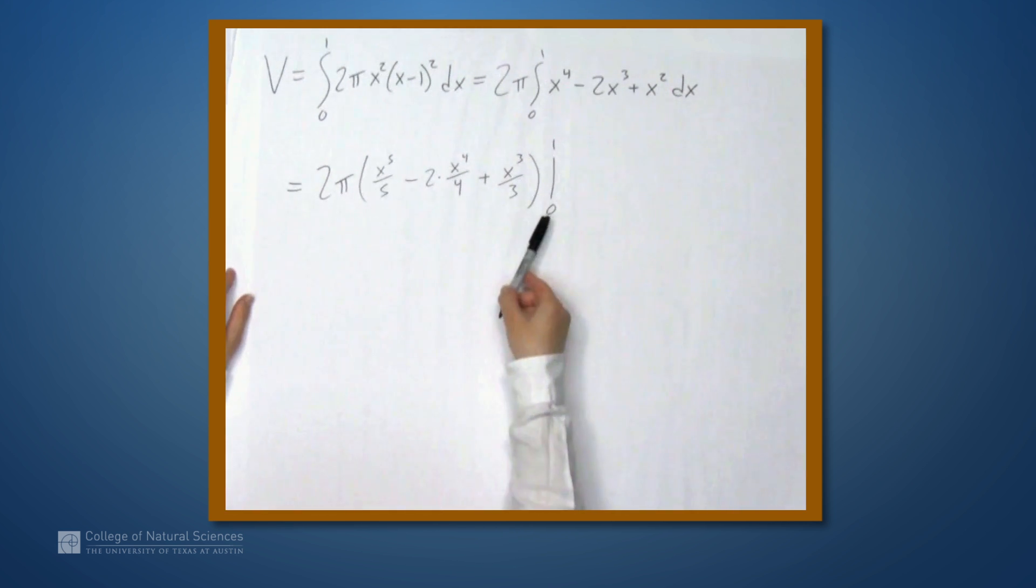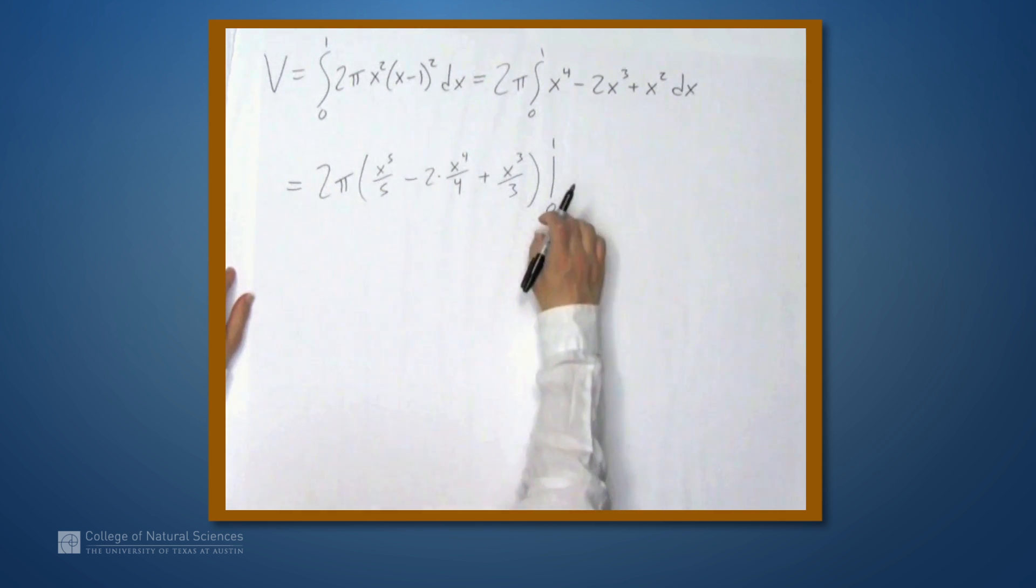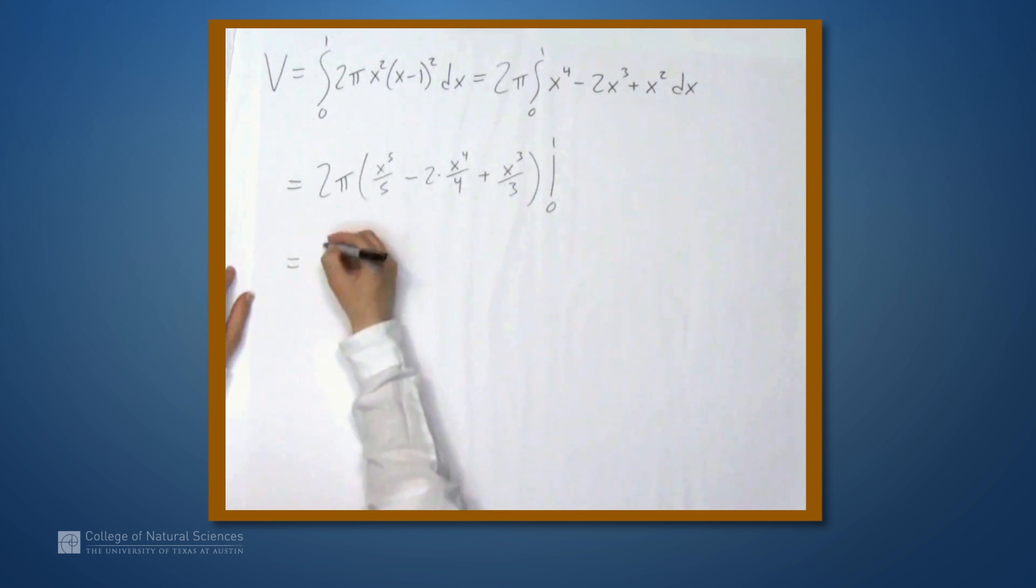Well, we know that when we plug in 0, each of these terms is going to become 0, so we can ignore that part. Let's just plug in 1, and we get 2π times 1 fifth minus 2 over 4, which is 1 half, plus 1 third.